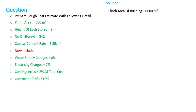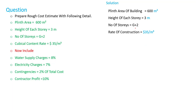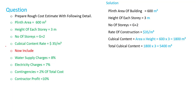Now let's go for the solution. Plinth area of the building is 600 square meters. Height of each story is 3 meters, and the number of stories is ground plus 2, meaning 3 stories. The rate of construction is $35 per cubic meter. The cubic content per story equals 600 square meters multiplied by 3 meters, giving us 1800 cubic meters.